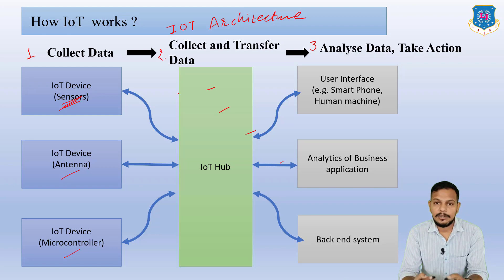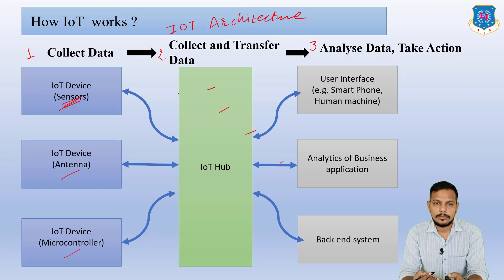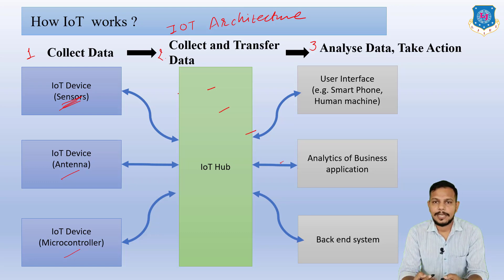The cloud stores the information and sends it to your smartphone. If you have an application related to that work, it shows you that your garden area has a certain moisture level and needs water, so you can control the watering in your garden remotely. This is how IoT works — the IoT architecture in practice.